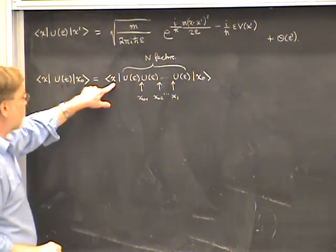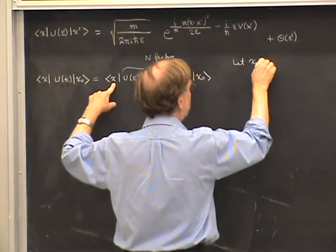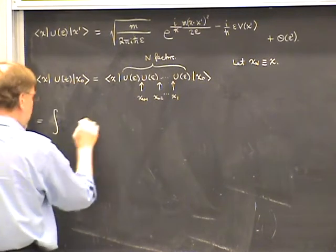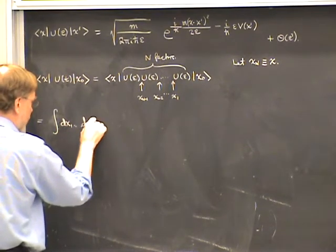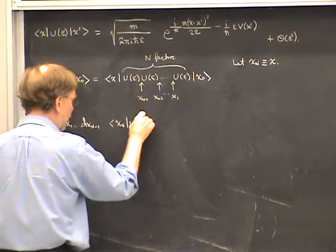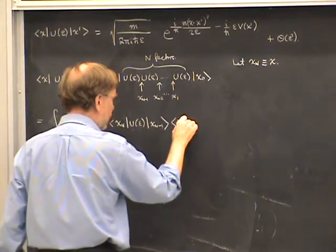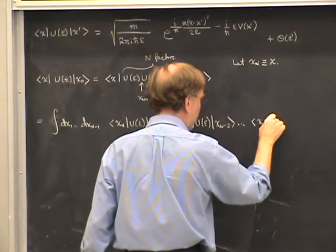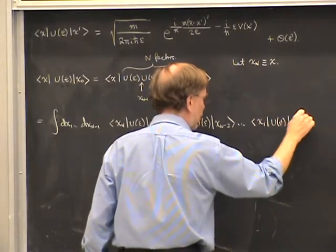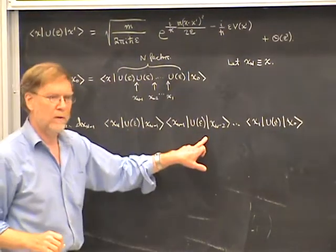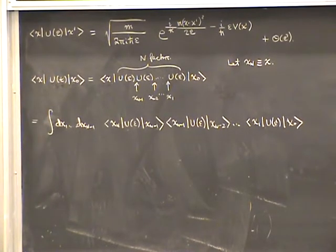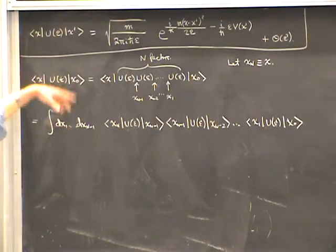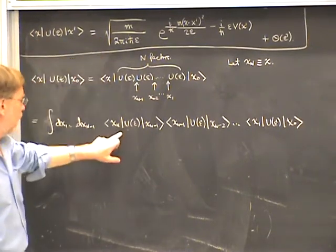Doing this, the propagator becomes an integral over intermediate X's — dx₁ through dx_{N-1} — times a product of short-time propagators: ⟨X_N|U(ε)|X_{N-1}⟩ times ⟨X_{N-1}|U(ε)|X_{N-2}⟩ down to ⟨X₁|U(ε)|X₀⟩. It becomes a product of short-time propagators. Up to this stage, it's exact. Now we get to use our short-time propagator result, which is the main result of the calculation above.